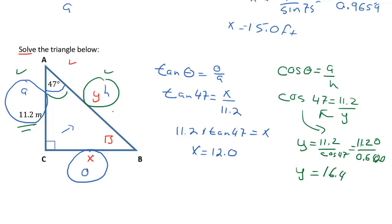We're just about done. We now know that y is 16.4, and we know that x is 12.0. The only thing we don't know is b. We don't need a trig function to calculate b, because we know that all the angles inside of a triangle add up to 180, and we have 47 here, we have 90 here. That means that b must equal 43 degrees.